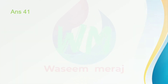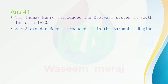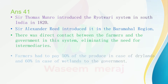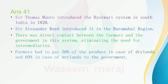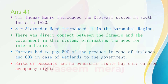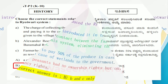Answer 41: Sir Thomas Munro introduced the Raitavari system in South India in 1820. Sir Alexander Reed introduced it in the Baramahal region. There was direct contact between the farmers and the government in this system, eliminating the need for intermediaries. Farmers had to pay 50 percent of the produce in case of dry lands and 60 percent in case of wetlands to the government. Raitavari peasants had no ownership rights but only enjoyed occupancy rights. So the correct answer is option B — B and C only.